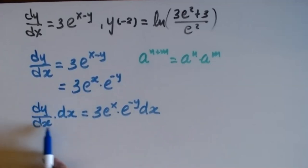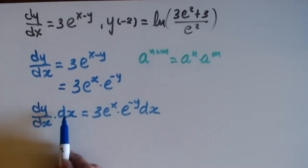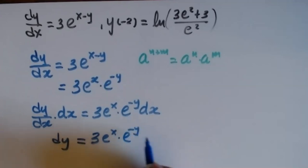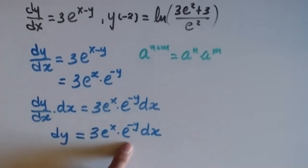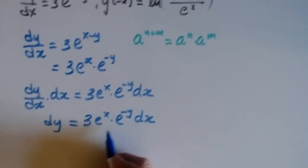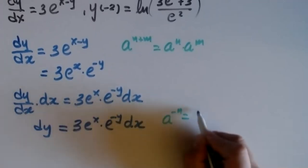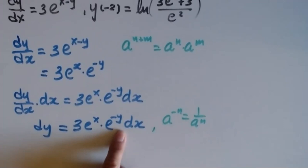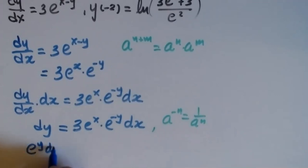Multiplying dy/dx by dx gives the differential dy — it's not simply canceling, it's the differential of y. So I have dy equals 3e^x · e^(−y) dx. I still have a y on the right side, so I move it to the other side. Recall that e^(−n) = 1/e^n, so I multiply both sides by e^y to cancel e^(−y). This gives e^y dy equals 3e^x dx.